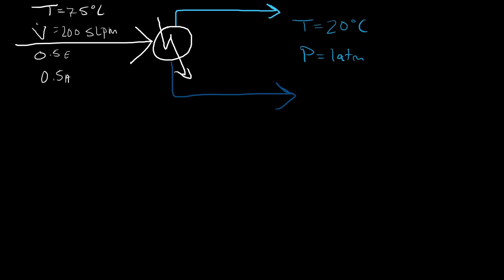Step two: label our streams. The inlet stream is labeled 'in' in green, the vapor stream is labeled 'V' in aqua, and the liquid outlet stream is labeled 'L' in navy. The problem gives us a volumetric flow rate of 200 standard liters per minute, so we need to convert it to moles. We need to make an assumption about the inlet stream to use an equation of state to obtain the molar flow rate.